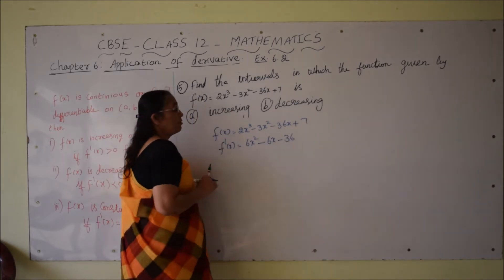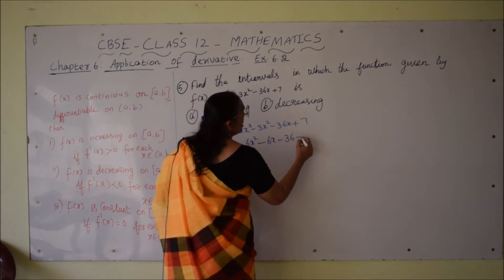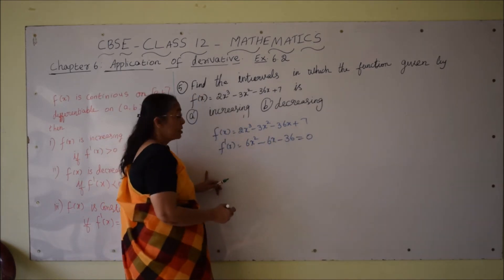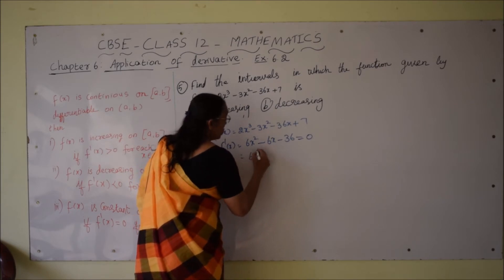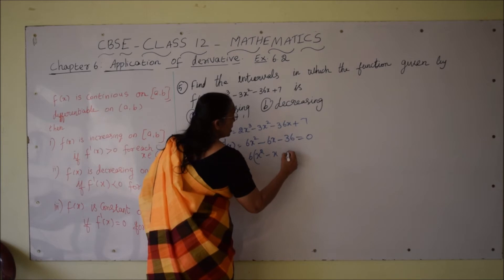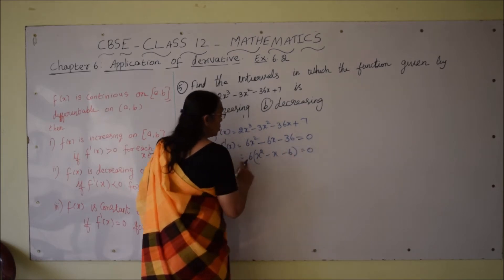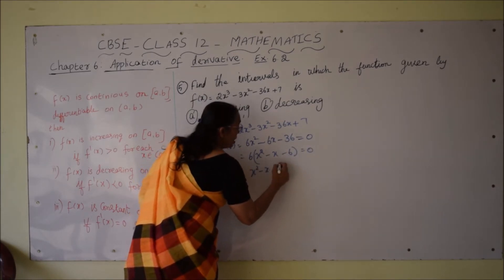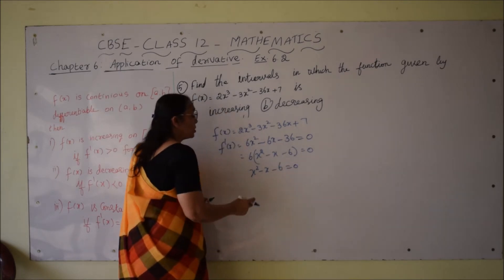So f'(x) is found. To find the turning points we have to equate this to 0. We can take 6 outside, giving 6 times (x² - x - 6) = 0. Since 6 cannot be 0, we get x² - x - 6 = 0.